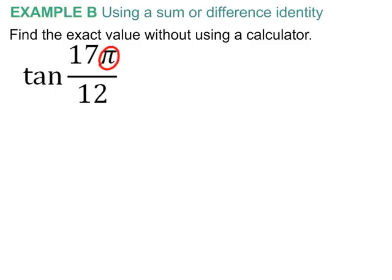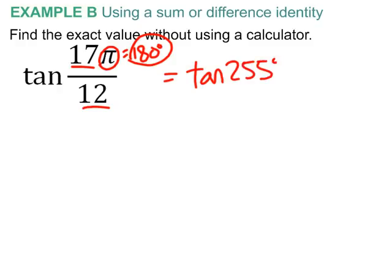We know that pi is equal to 180 degrees. So, if you plug that in, 180 degrees divided by 12 gives me 15. And, 15 times 17 is going to be 255. So, that is equal to tangent of 255. And, again, I make the argument that it's really easier to deal with degrees here. The reason is,